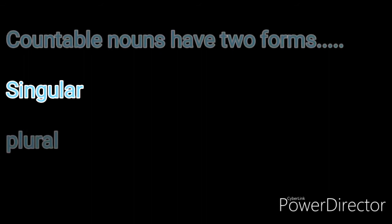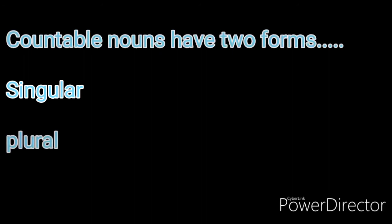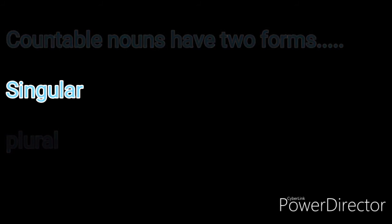Remember, there are two forms of countable noun: singular and plural. If we are able to make the plural of any noun, that is 100% a countable noun. For example, 'boy' — can we make the plural? Yes, we can. So boy is a countable noun. Singular denotes a single number; if a noun denotes more than one, that is plural. 'Boy' denotes one person — that is singular. 'Boys' denotes more than one — that is plural.